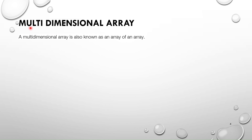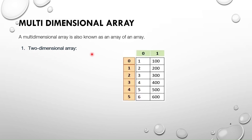Next is the multidimensional array. If the dimension is more than one, it is called a multidimensional array. A multidimensional array is also known as an array of arrays — it is a matrix of rows and columns. We mostly use two-dimensional and three-dimensional arrays.